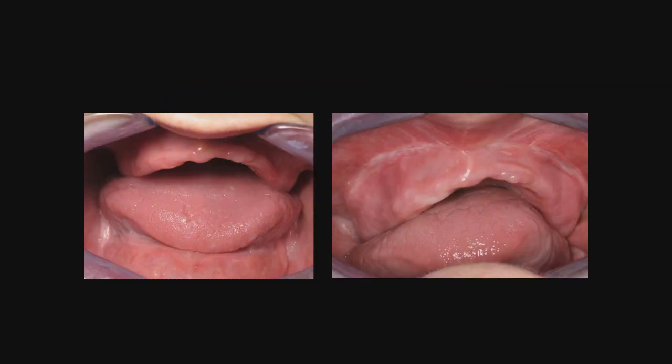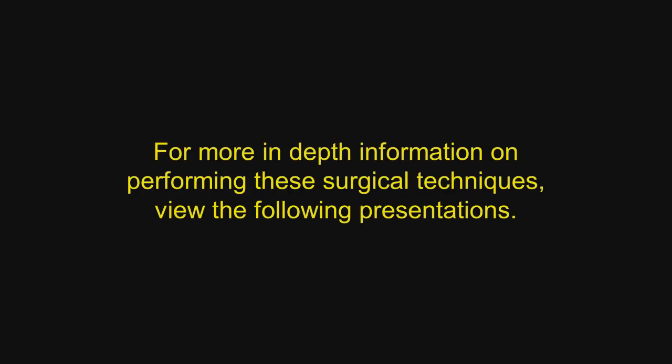On the left we see the pre-op with the shallow vestibule, and on the right we can see a vestibule that is now 12mm deep rather than 7mm. The Korn technique has many applications, not only in the young child, but also in the mature adult who has been wearing a denture for many years.